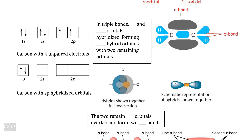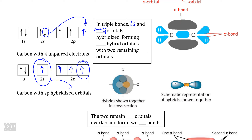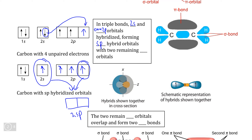Triple bonds similarly form in a manner more similar to double bonds. We start by moving the paired electron to the unoccupied p orbital, but in triple bonds, the 2s subshell is involved in hybridization with only one of the two p orbitals. So with four unpaired electrons, we hybridize the 2s subshell with only one of the p orbitals. Because we've combined the 2s subshell and only one p orbital from the 2p subshell, these are what we call sp hybrid orbitals, and the two remaining unhybridized 2p orbitals exist separately.